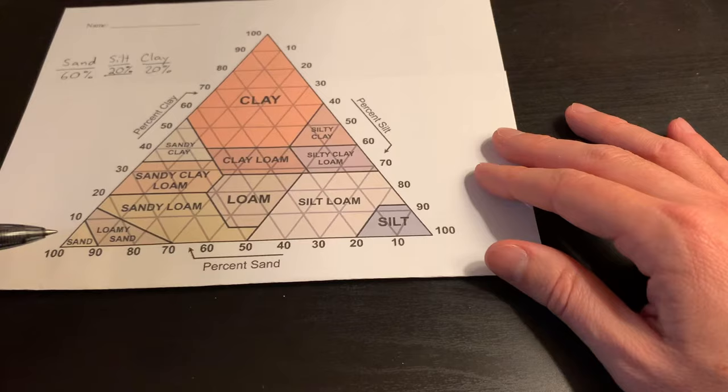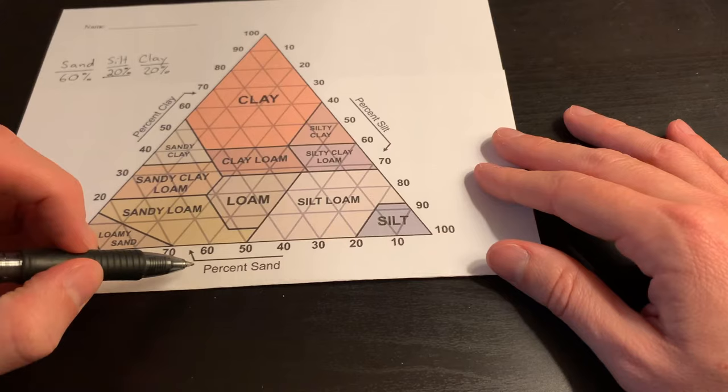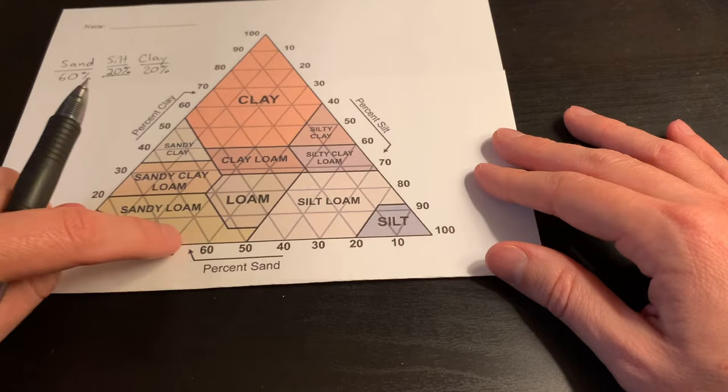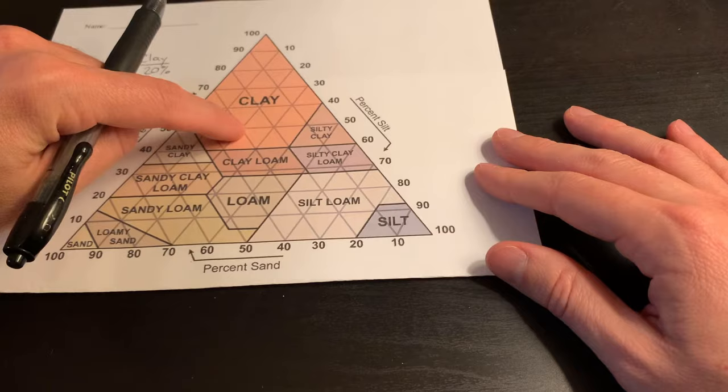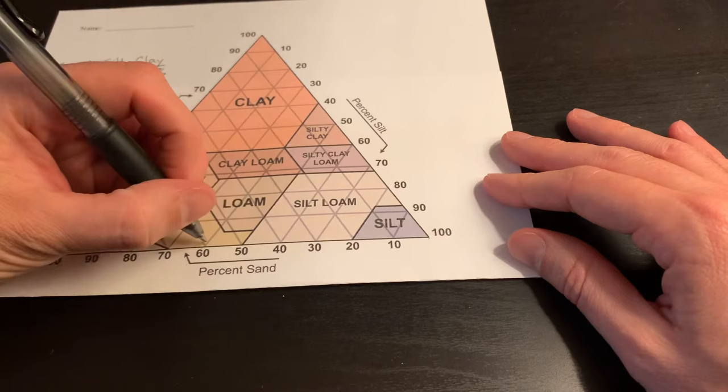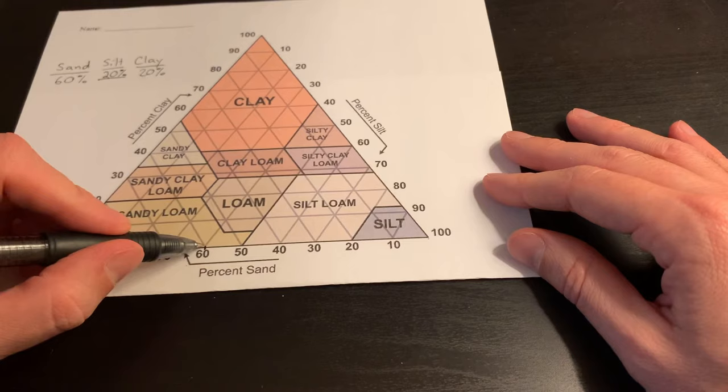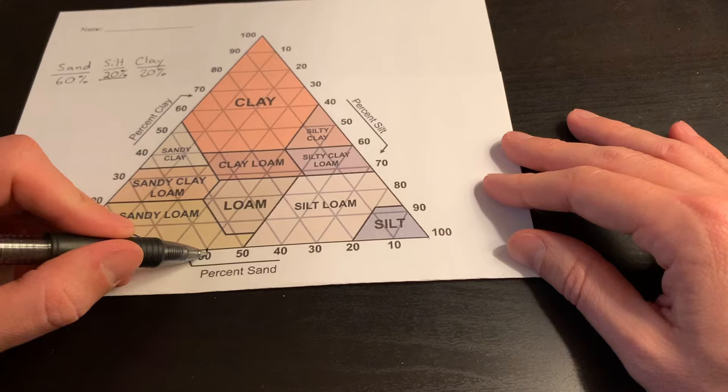For the sand, notice how it says percent sand and then see this little arrow pointing in this direction. That is telling you that we are going to read our lines in this direction. So we take our 60 percent sand and we find 60 percent on the triangle, and we are going to read that in this direction for sand.